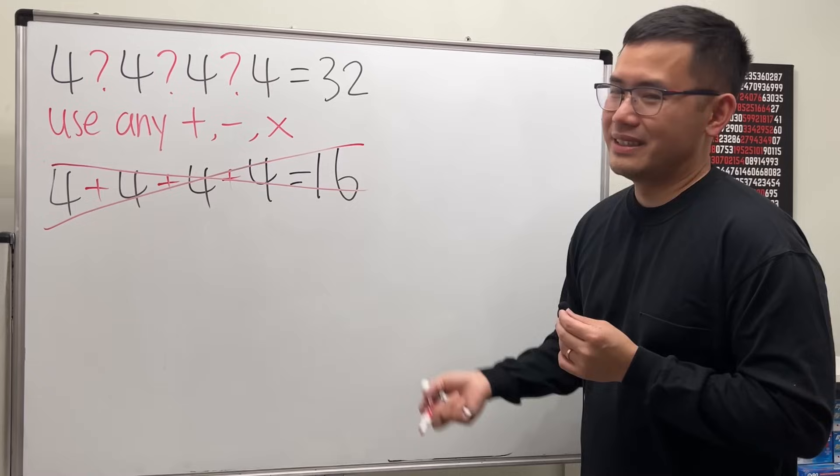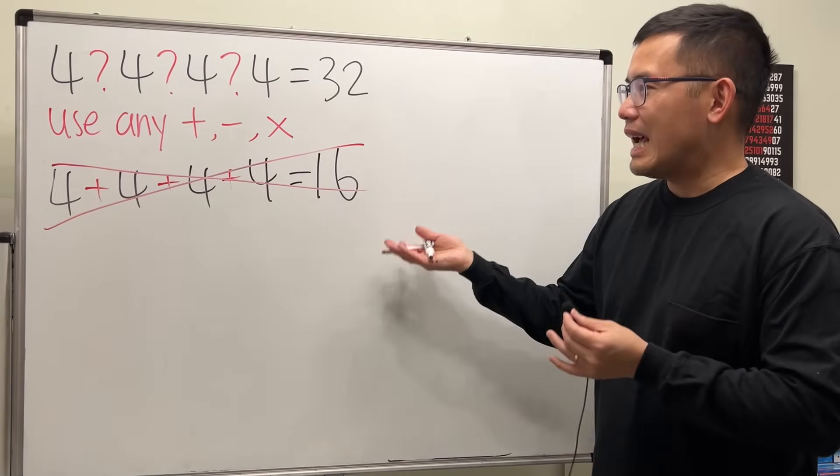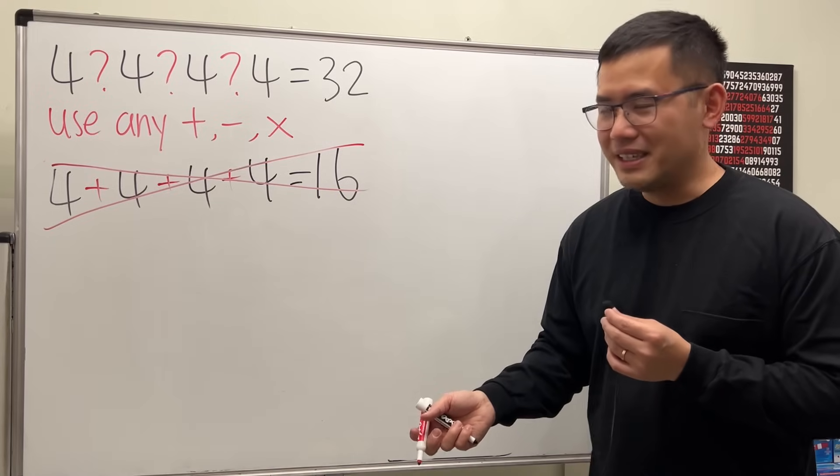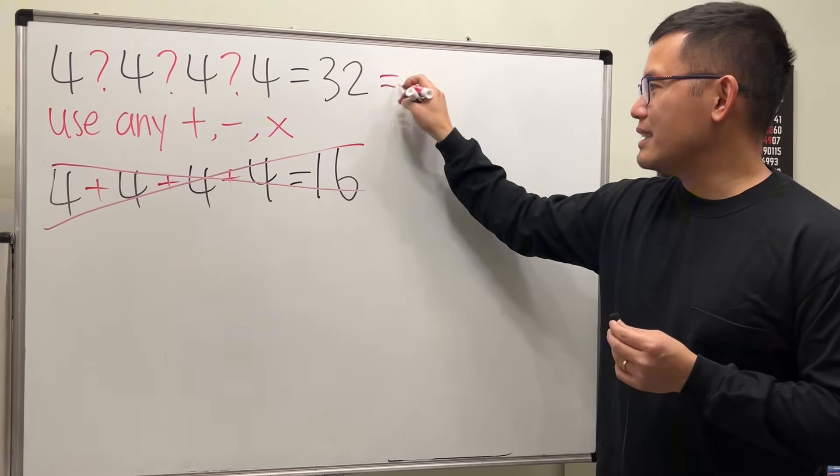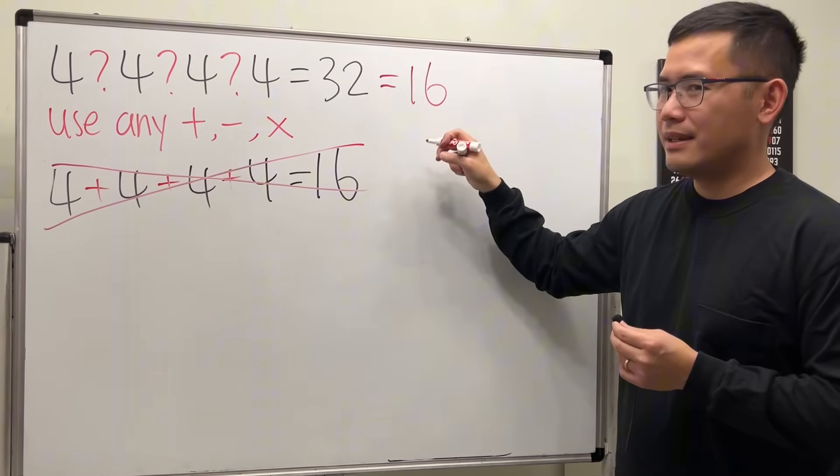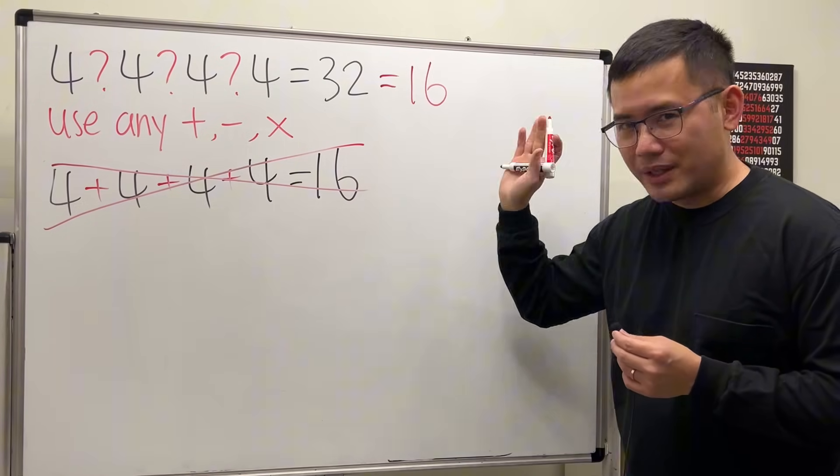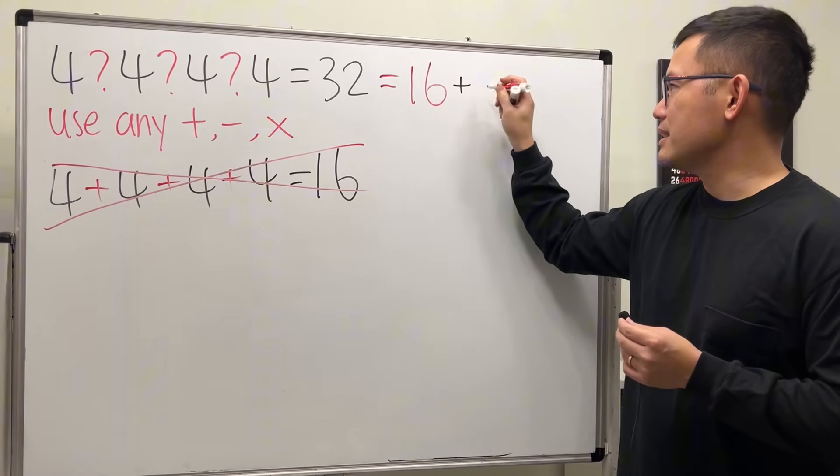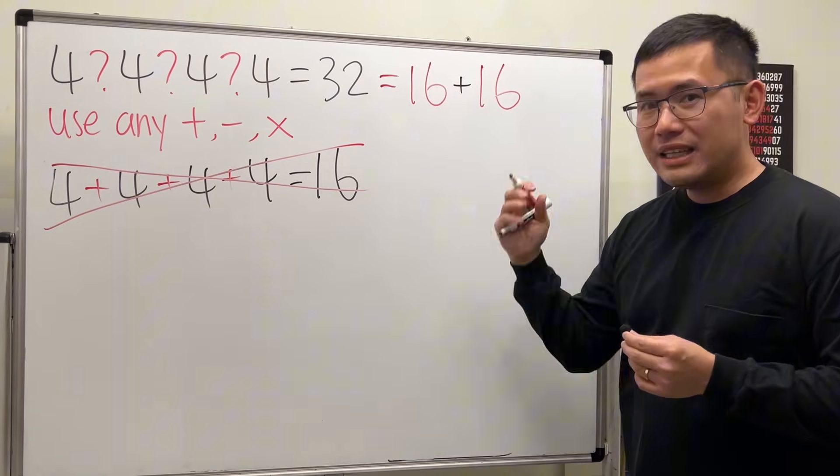But by doing this, it actually gave me an idea because 32 is 16 times 2. But we can also say 16 + 16. From here, I just ask myself: can I get 16 from 4 and 4?